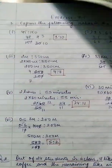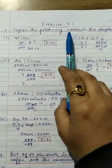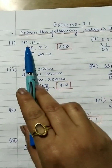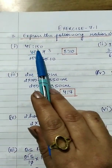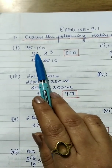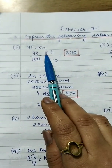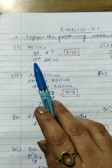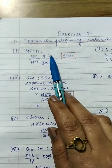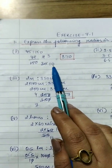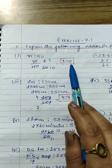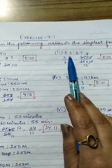Now let's move to Exercise 7.1. Question 1: Express the following ratios in the simplest form. First: 45:150. Writing as 45/150 — both are in the table of 5, giving 9/30. Then 9 and 30 are both in the table of 3, giving 3/10. So the answer is 3:10. Second: 3.5:6.5.